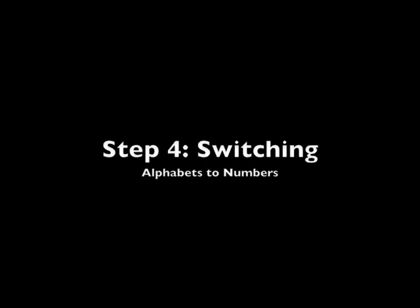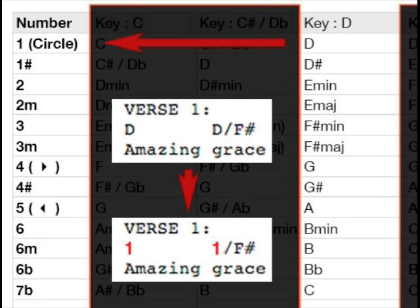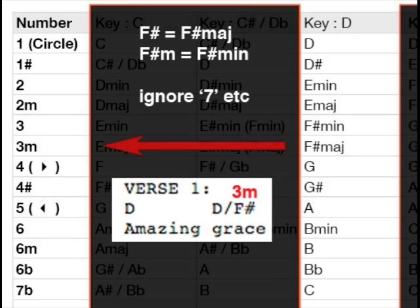Now we are ready to do the switching. Find all the instances of a particular letter and switch it around with its corresponding number. If you see a chord without a M, major or minor indicator behind it, you will take it as a major. You can also safely ignore the numbers behind chords.